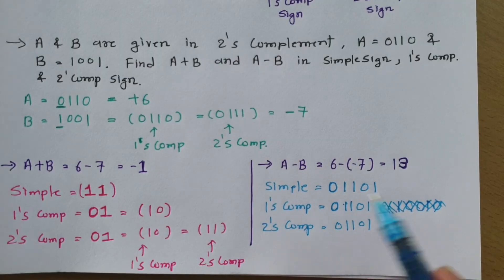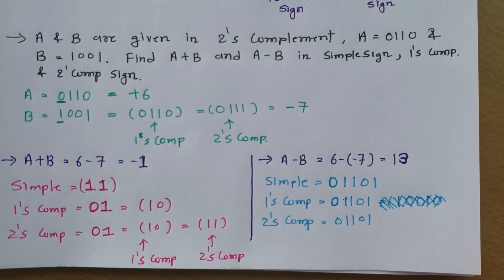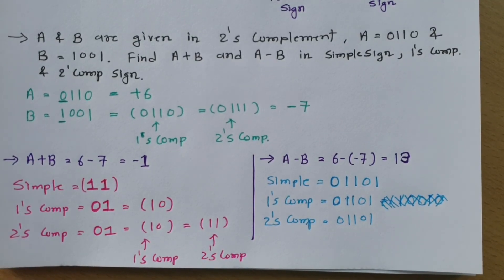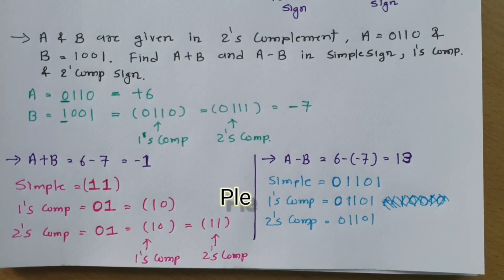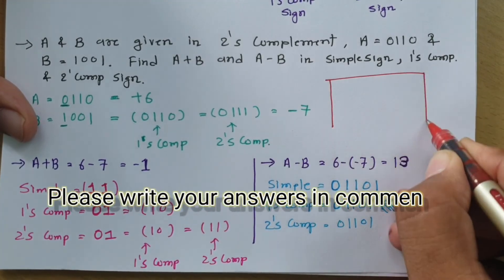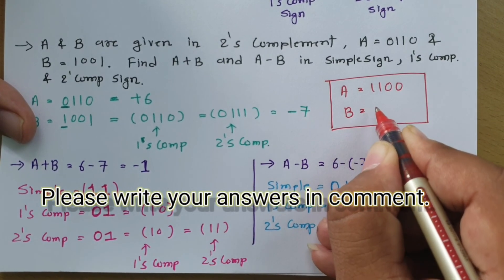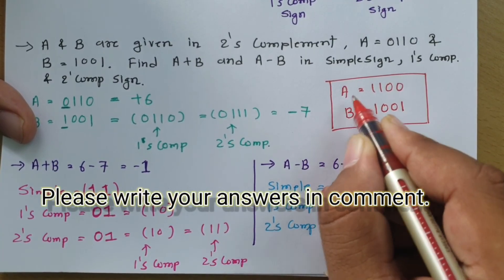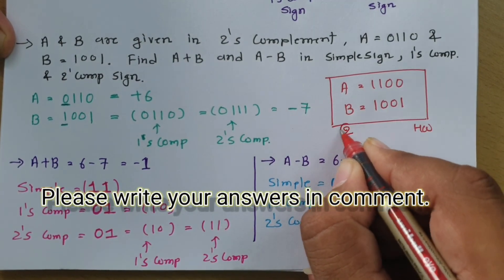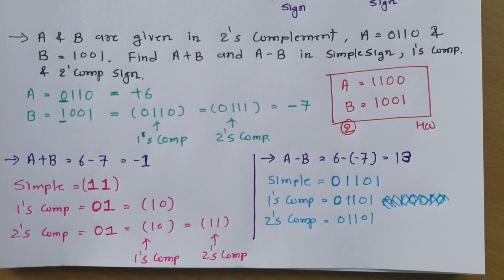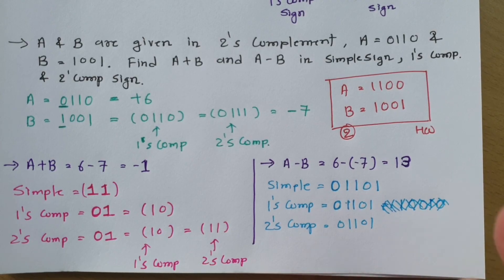I hope it is now clear how to convert a given decimal digit with sign in simple sign representation, one's complement sign representation, and two's complement sign representation. Here is a homework problem: if A equals 1100 and B equals 11001, write your answers for A plus B and A minus B in the comments. I'll get back to you based on your answers and place future videos accordingly. Thank you so much for watching.